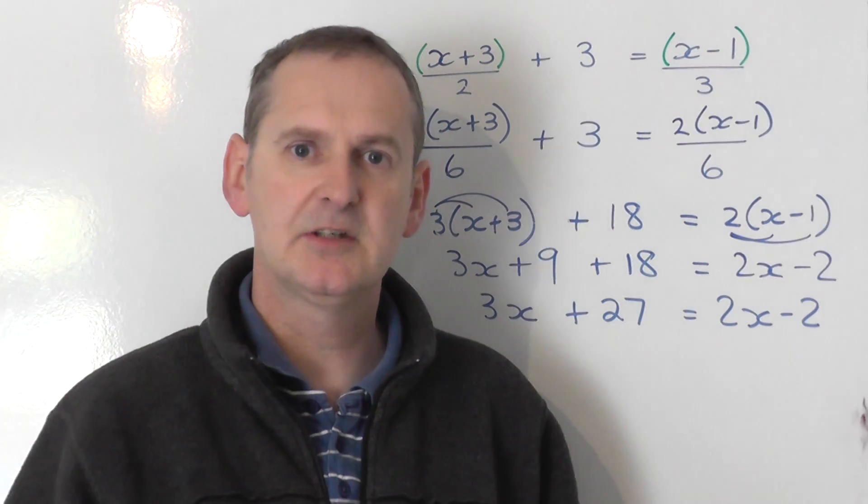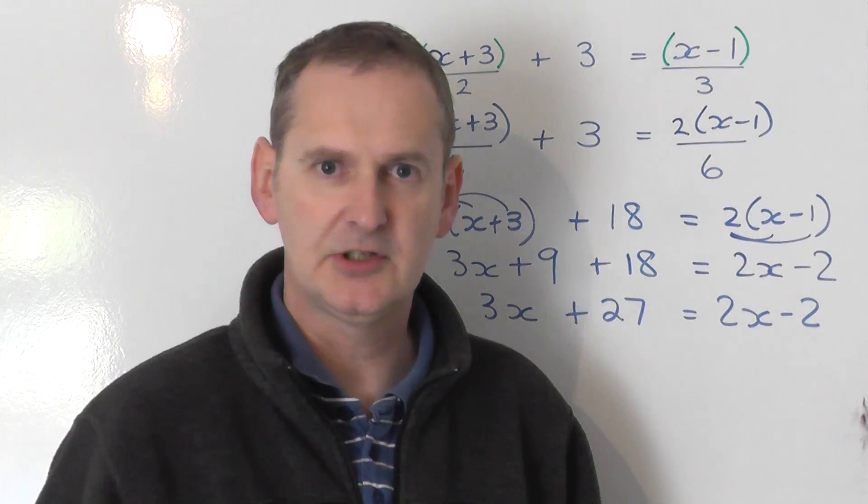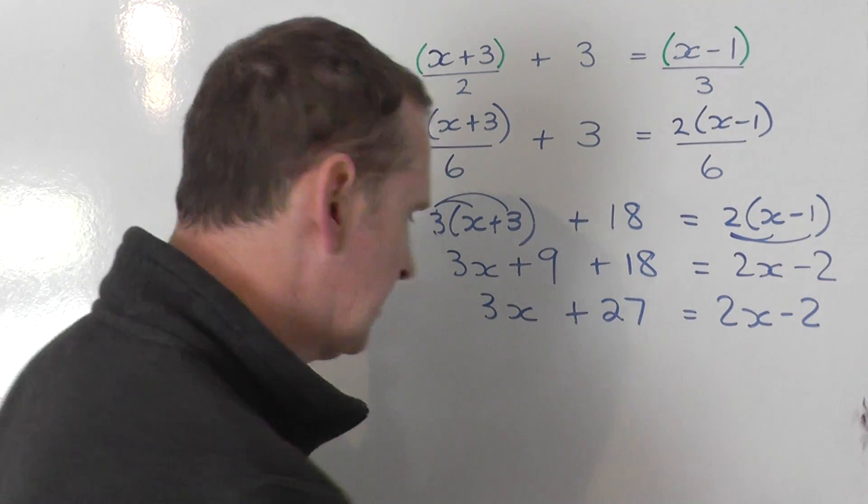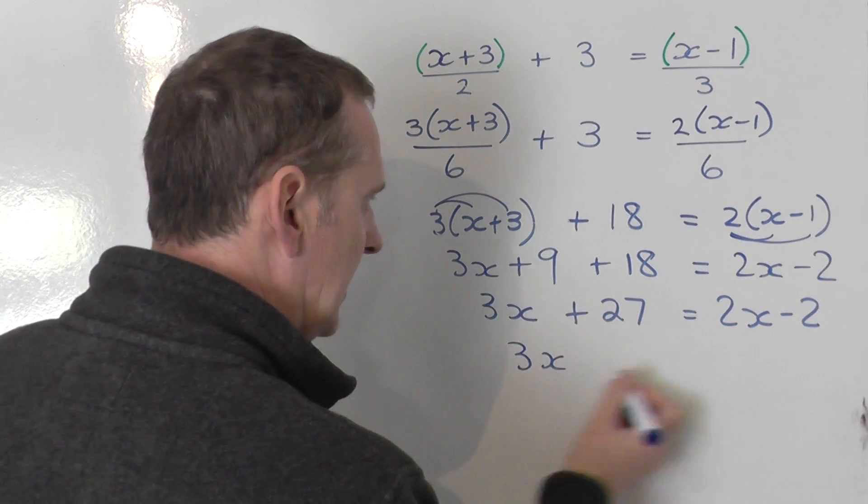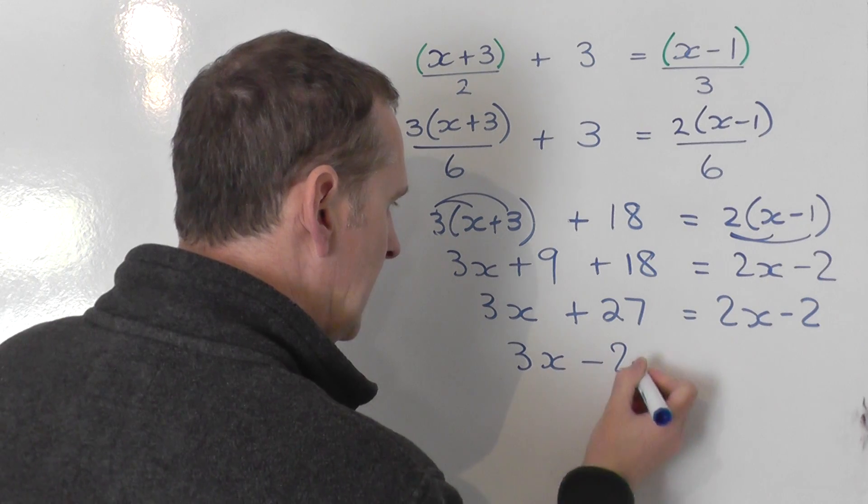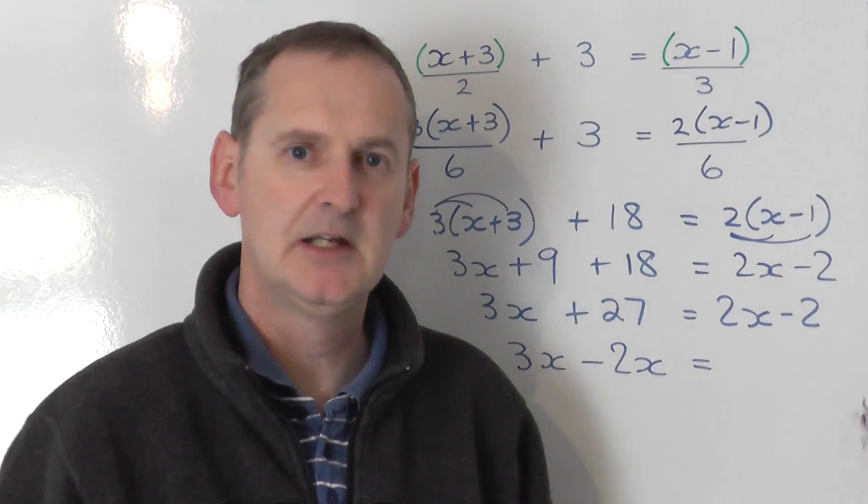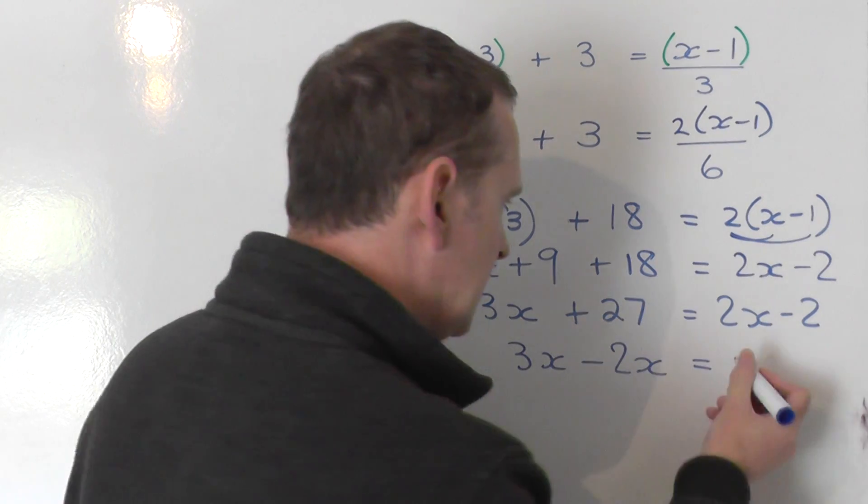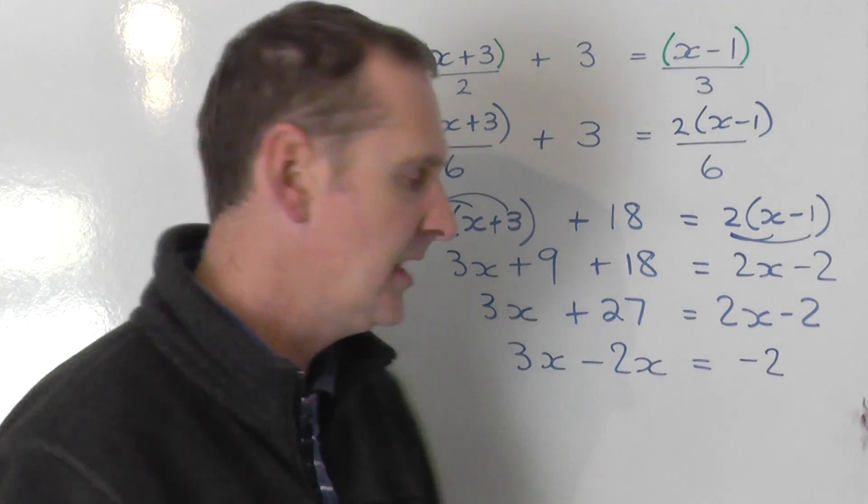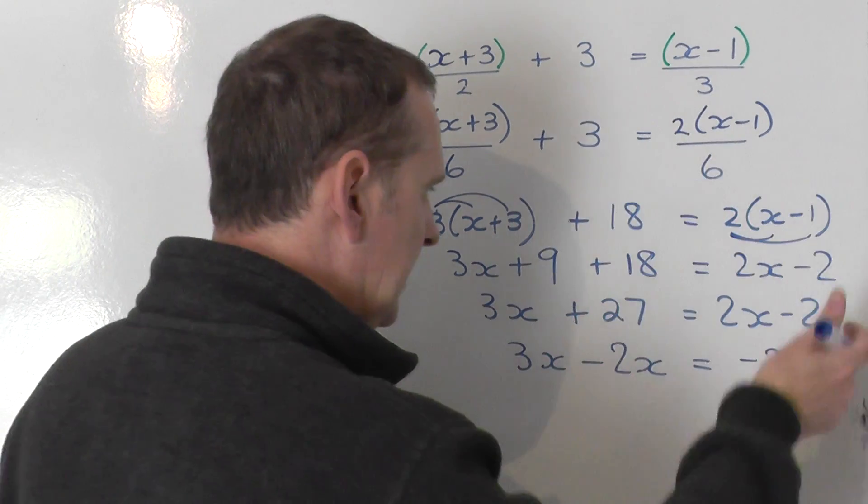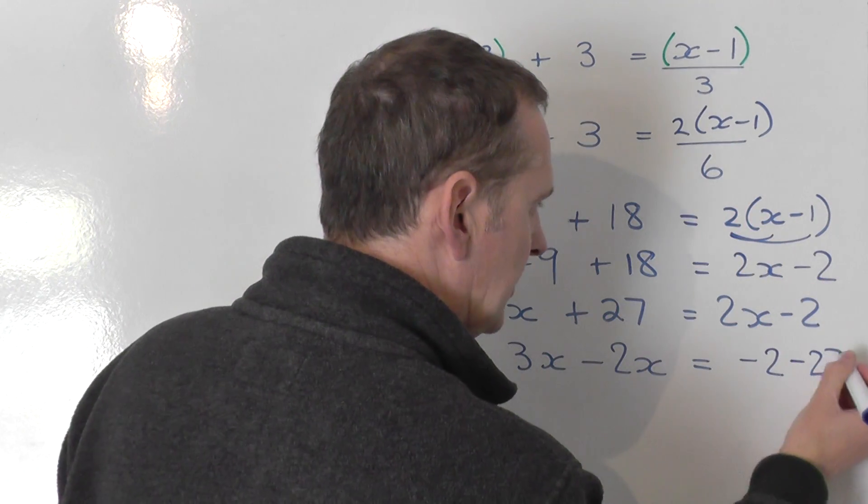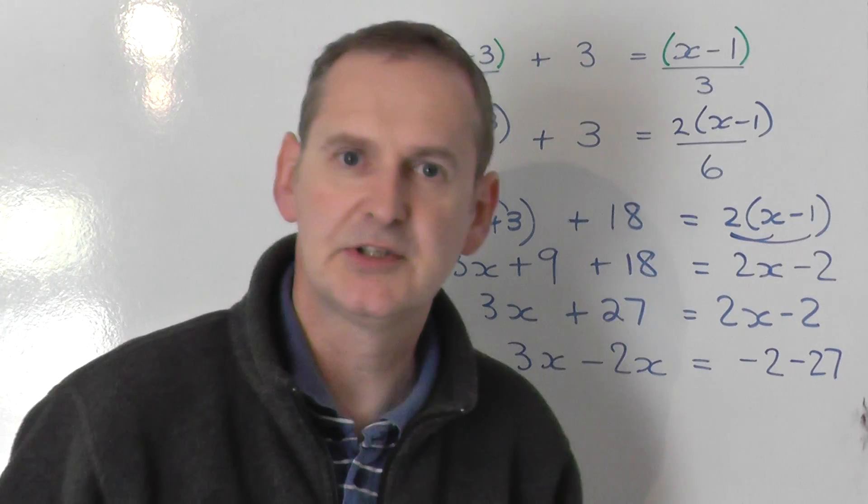Looking at that, I've got x's on both sides. I know I can collect x's on the left, because there's more. 3x is more than 2x. So 3x on the left, take the 2x over, becomes a minus 2x on the left. Swap sides, swap signs. And then the numbers, the minus 2 stays put, doesn't swap sign. And the plus 27, take it to the other side, makes it a minus 27. It swaps to a minus on the right.